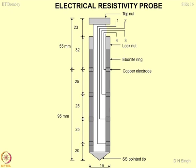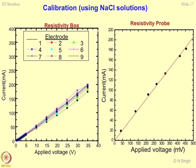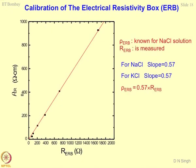This probe can be inserted in the soil mass to do resistivity profiling. Calibration is done by filling the box with a sodium chloride solution of known resistivity. The current and applied voltage vary in a linear fashion. Similarly, the probe can be dipped in a column of sodium chloride solution, and a relationship between applied voltage and current can be drawn. Knowing the resistivity of the solution and the resistance measured using the resistivity box, you can obtain the slope of this line, giving you the relationship between resistivity and resistance.